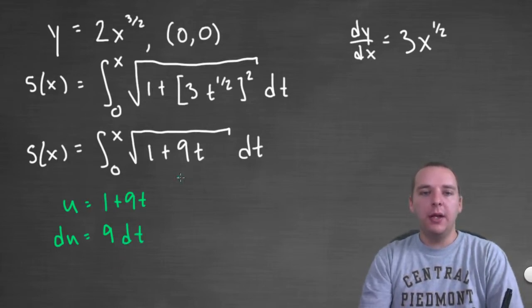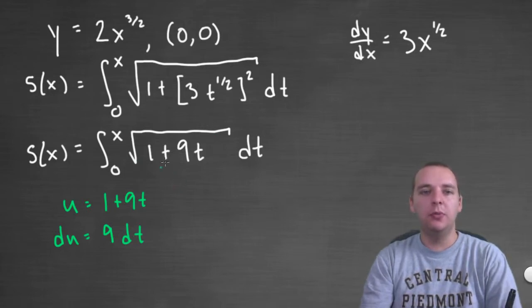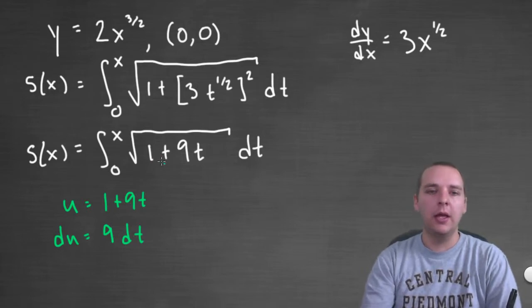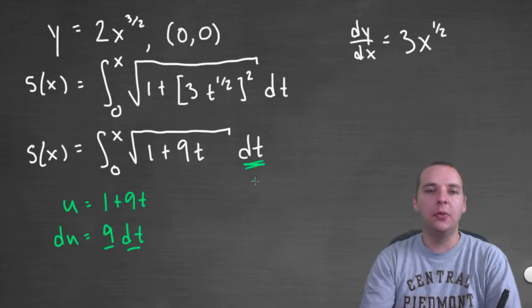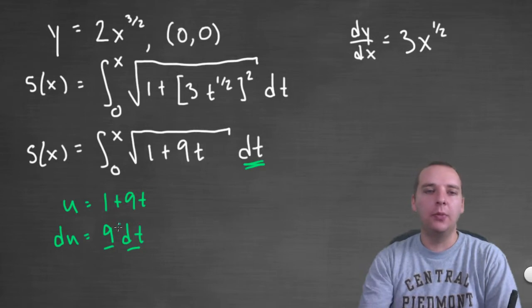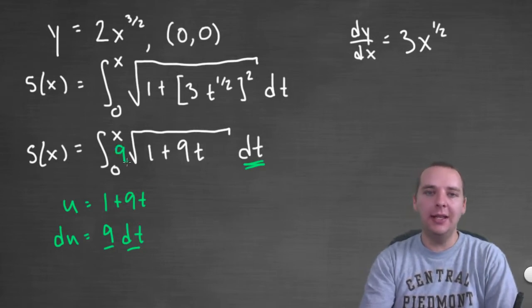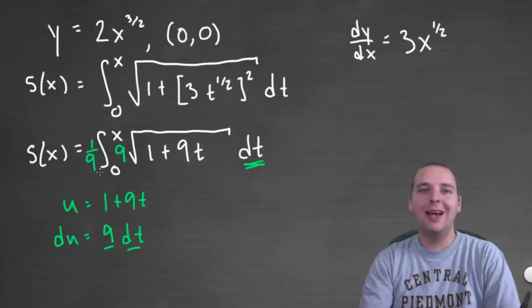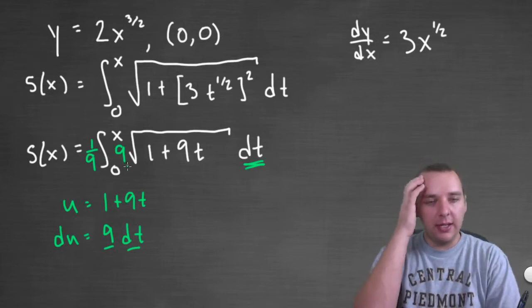And then we'll put a dt as well. So when we rewrite everything some stuff stays and some stuff goes. We have a square root of u that's really nice so that's going to go away. But unfortunately to get a du I need a 9 dt but I only have a dt only. So how am I going to get a nine? Well one way we can do this is we can insert a nine in the integrand and we'll balance it with a 1 ninth on the outside of the integral. It's a very common thing to do. So now we can rewrite it.